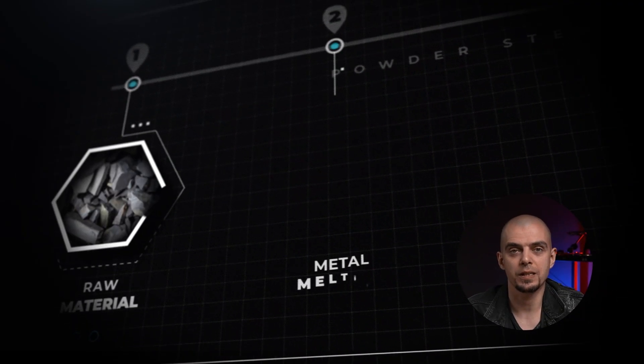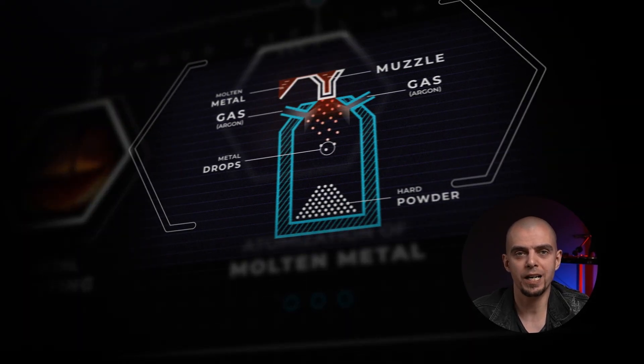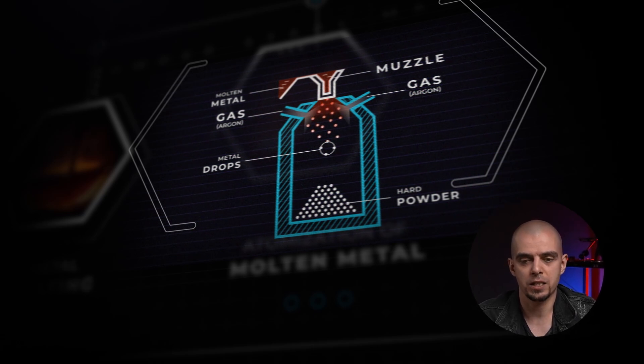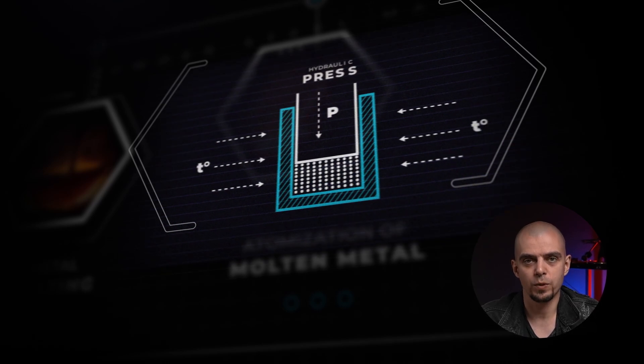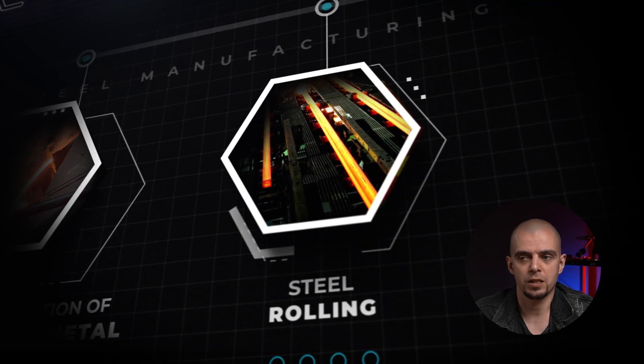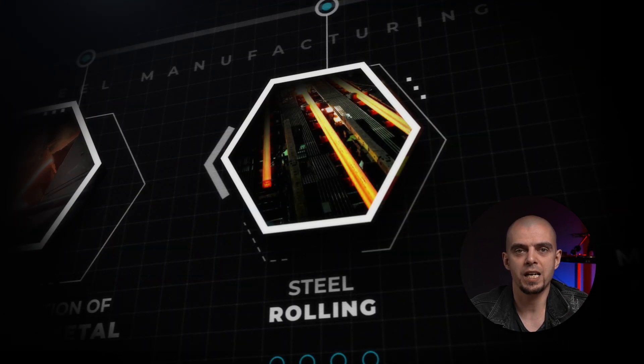Crucible particle technology appeared in 1970. It solved the problem of uniformity of steel structure and made it possible to produce high-alloy grades of steel that were previously unavailable with traditional technology. When it comes to crucible particle technology, instead of pouring molten metal into molds, it passes through a narrow nozzle and under high pressure is sprayed into spherical droplets, which quickly solidify in a special chamber. A sort of metal dust is created, which is then pressurized under high temperature, creating a solid and homogeneous structure of steel that is then hot rolled to gain a new shape.